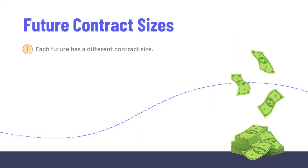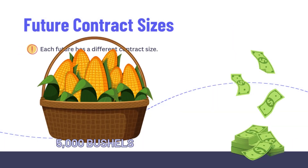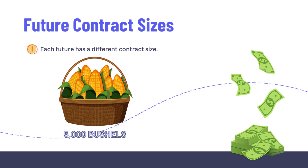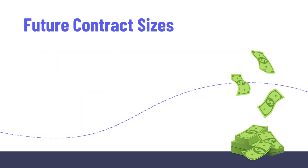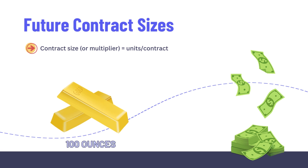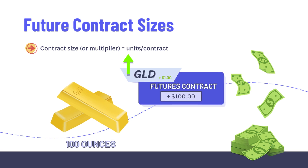Keep in mind that with futures, each future has a different contract size. For example, corn has 5,000 bushels in each contract while gold has 100 ounces. The contract size or multiplier determines how many units are in the contract. For example, if you went long on a gold future with a contract size of 100, it means that every time the price of gold increases by one dollar, you will gain $100 per contract as your account is marked to market.